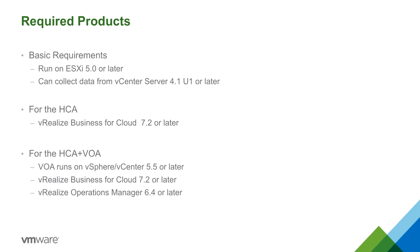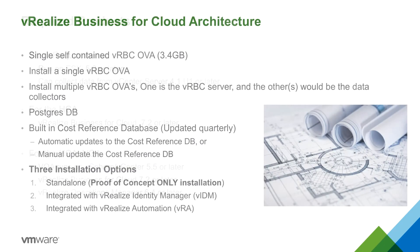Now I'll discuss the HCA installation itself. VMware vRealize Business for Cloud is the product used to perform the HCA. It comes in an OVA format that can be downloaded from VMware, and it's recommended to have this download on hand before beginning the HCA to save time. The VRBC deploys as a single appliance with an embedded database. The cost reference database provides baseline cost information and can be updated automatically or manually through the appliance UI. There are three installation options for VRBC, and for HCA the standalone option is recommended, as it provides the quickest and least intrusive path for installation.